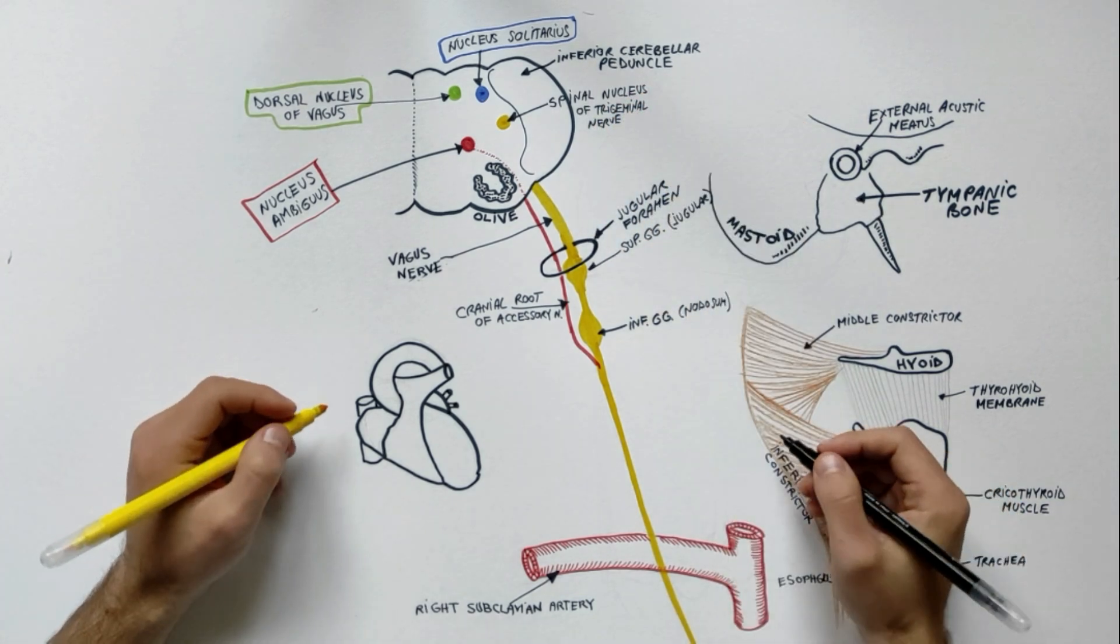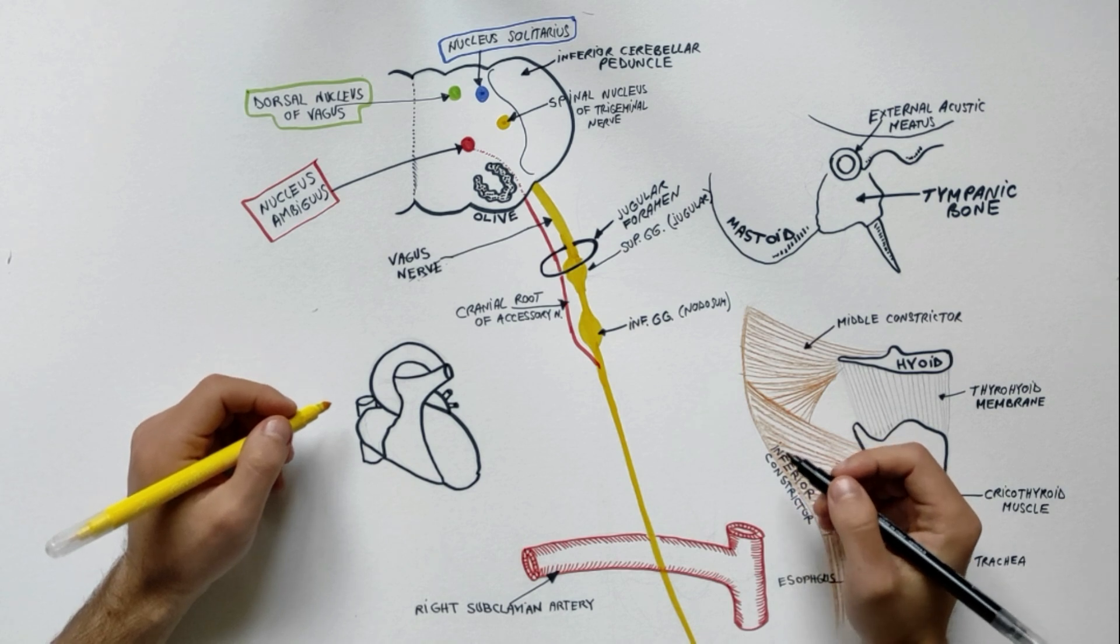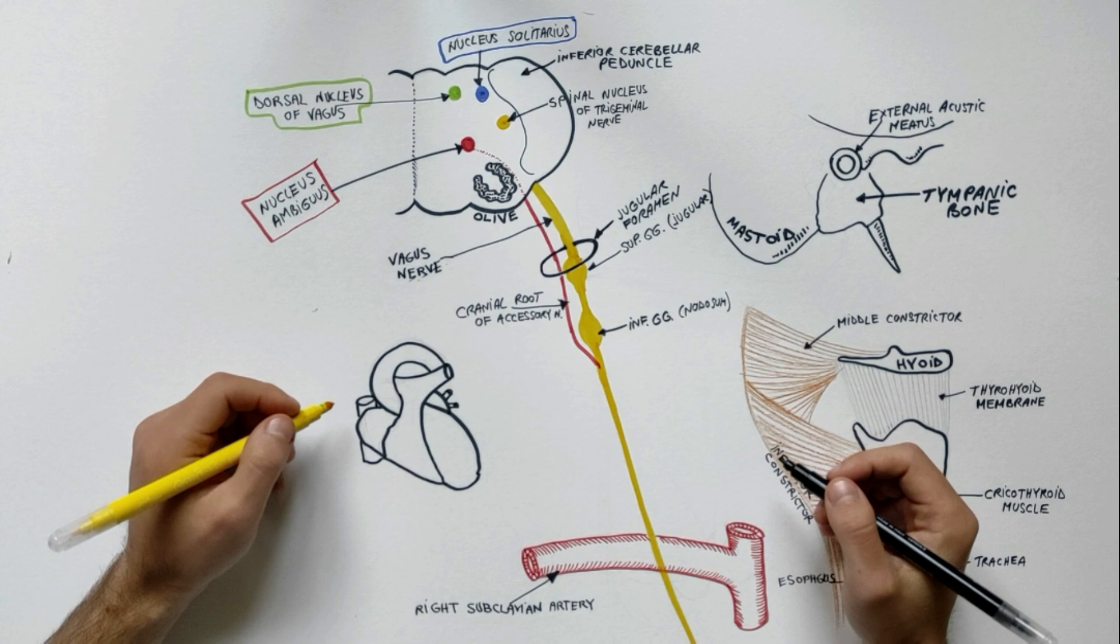We are now in a position to indicate the branches and distribution of the vagus nerve in the region of head and neck.